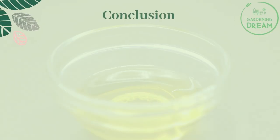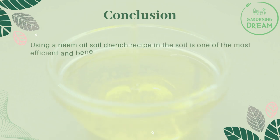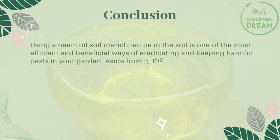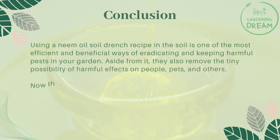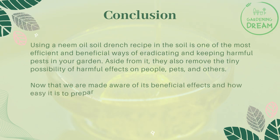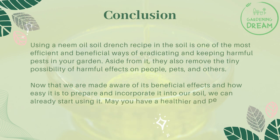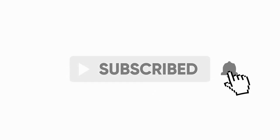Conclusion: Using a neem oil soil drench recipe in the soil is one of the most efficient and beneficial ways of eradicating and keeping harmful pests out of your garden. It also removes the tiny possibility of harmful effects on people, pets, and others. Now that we are aware of its beneficial effects and how easy it is to prepare and incorporate into our soil, we can start using it. May you have a healthier and pest-free garden from now on! If you liked this video, don't forget to like and subscribe.